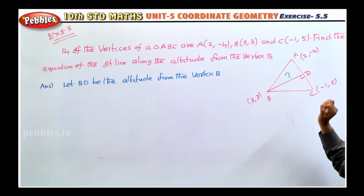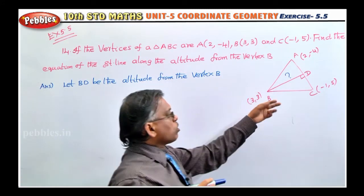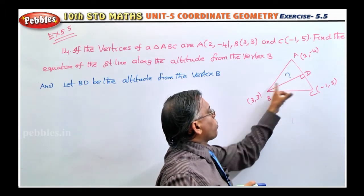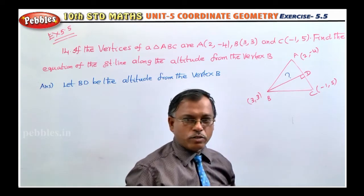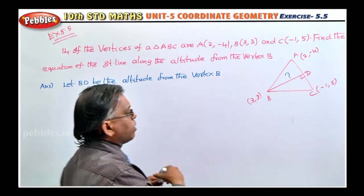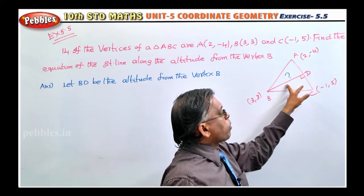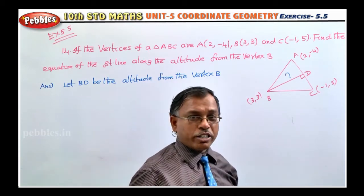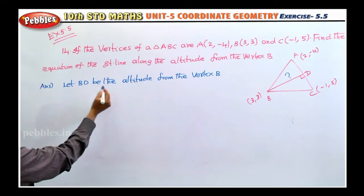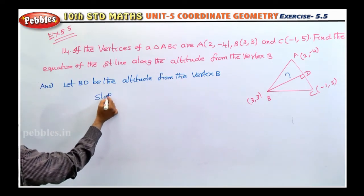We need to find the equation of altitude BD. Through vertex B, one point is already known. So if we find the slope of BD, we can use slope-point form to find the equation. To find the slope of BD, we first find the slope of AC, because BD is perpendicular to AC. Let BD be the altitude from vertex B. Now find the slope of AC.